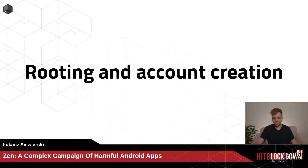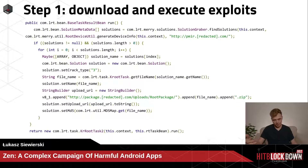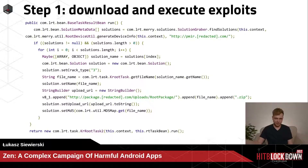Now moving to rooting and account creation. The app roots the phone by connecting to a server and downloading what they call a 'solution' — which is an exploit. The app sends device info to the C&C, and the C&C decides which exploits will work on that particular device. The exploits on the C&C are protected from reverse engineers because you need to know which device you want to exploit and send that info to the C&C — you never know which exploits are available or which devices can be targeted.